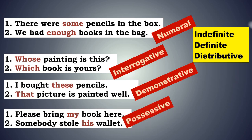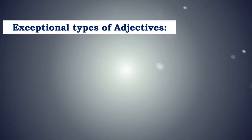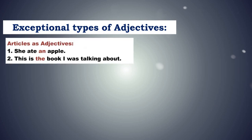So these were all the types of adjectives. These last three — interrogative, demonstrative and possessive — it is absolutely essential that they should be followed by nouns in order to be termed adjectives. Now let us understand the exceptional types of adjectives. She ate an apple. This is the book I was talking about. Here, an and the are articles, but these articles also signify adjectives — they determine how many or which particular thing.